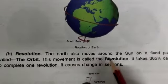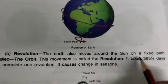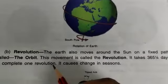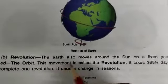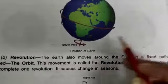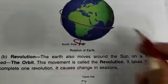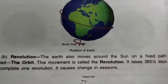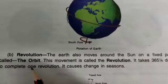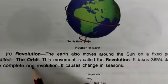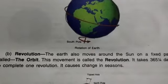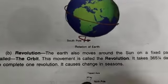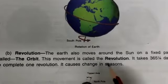The Earth also moves around the Sun on a fixed path called the orbit. This movement of the Earth around the Sun on a fixed path is called revolution.